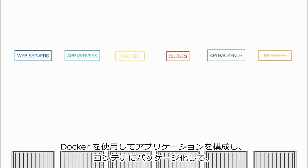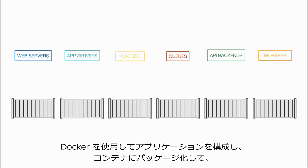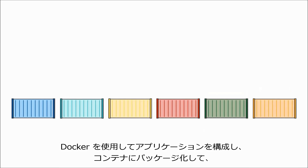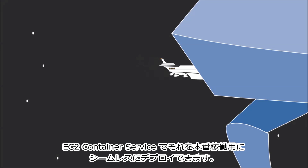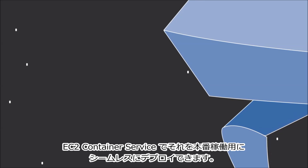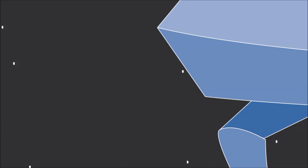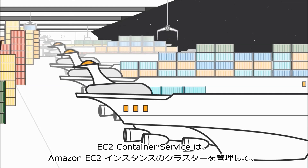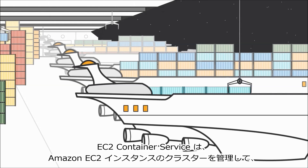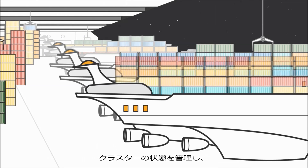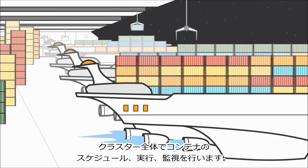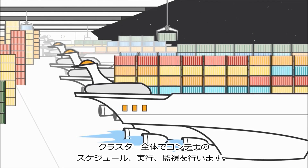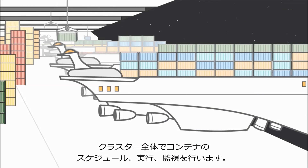You can build and package applications into containers with Docker and then seamlessly deploy the applications into production with EC2 Container Service. EC2 Container Service manages a cluster of Amazon EC2 instances for you and takes care of the state of your cluster, as well as scheduling, running, and monitoring containers across your cluster.